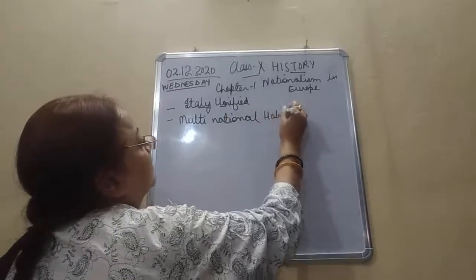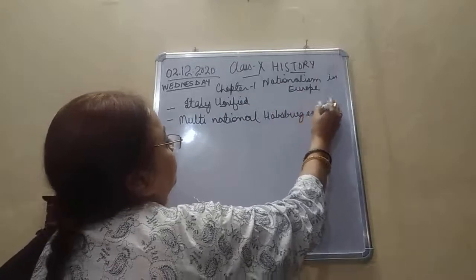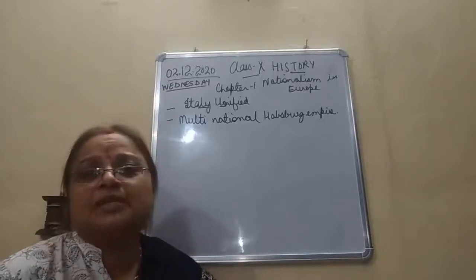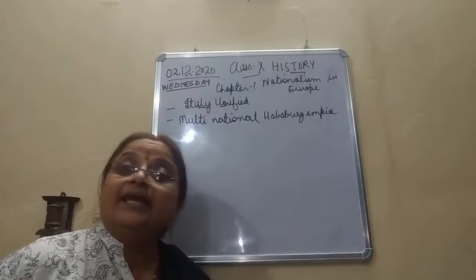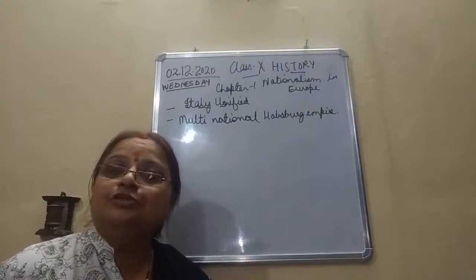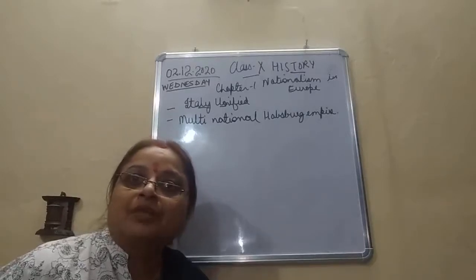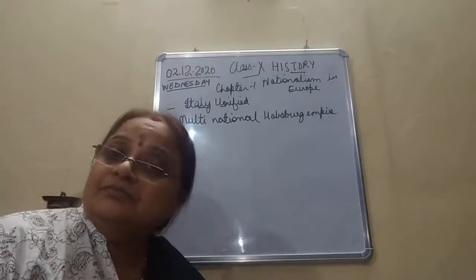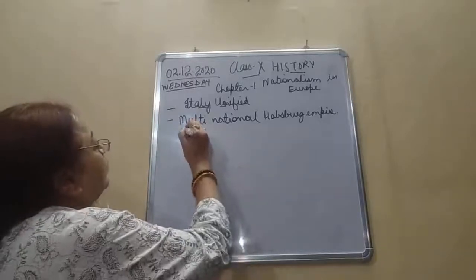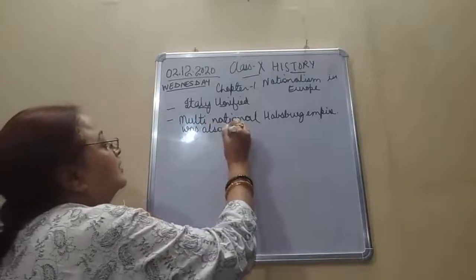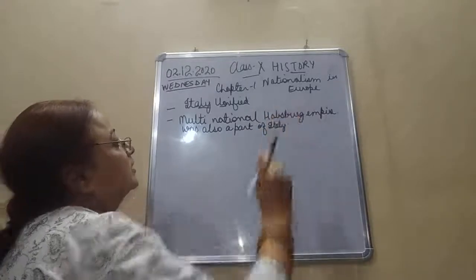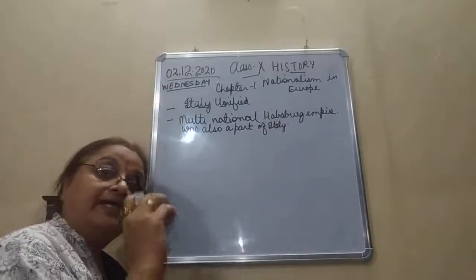The multinational Habsburg Empire also had a presence in Italy. The Habsburg Empire had Italian-speaking people, German-speaking people, Russian, and many different cultural units. Part of the Habsburg Empire was also in Italy.